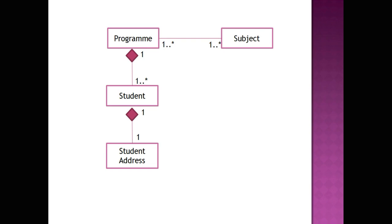I am going to use the same case study we studied while learning the default code-first convention. One program has many students, one student has one address, one program has many subjects, and one subject has many programs — that's why there is a many-to-many relationship between program and subject. While studying the default code-first convention we were unable to establish a one-to-one relationship, but with data annotation we can establish that as well.